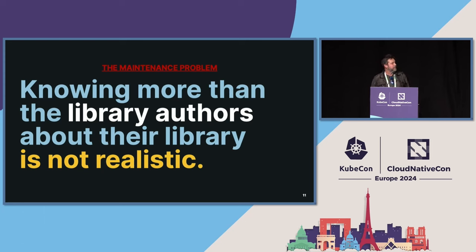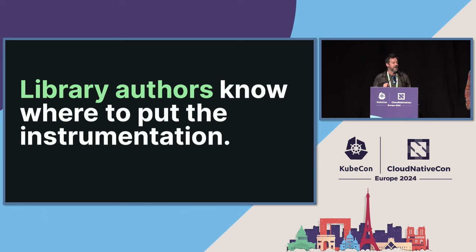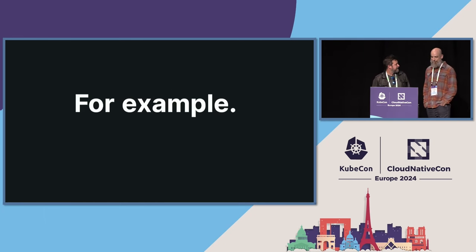It's also not realistic that we, the OpenTelemetry maintainers, would be incredible experts at every single software library out there that we need to provide instrumentation for. If we happen to be users of a library, that's great — we might have some insight as to specifically what you would want out of that library. But we're not going to be users of every piece of software that everyone else wants to use. So it's just not realistic that we would be the experts at individual libraries. We're experts at observability, but not at libraries. Who are the experts? Well, the authors of said libraries. Each library author presumably, hopefully, would know what's important about their library. They would know where the best place in their library is to put that instrumentation. They would also know what instrumentation is important — what is it that you really want to know about the software when you're running it.